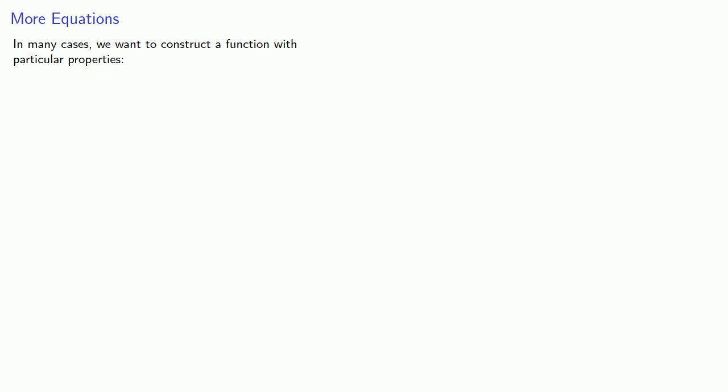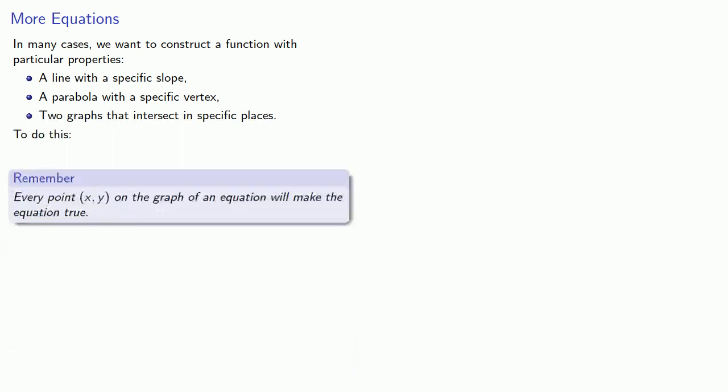In many cases, we want to construct a function with particular properties. For example, a line with a specific slope, a parabola with a specific vertex, two graphs that intersect in specific places. To do this, it's helpful to remember every point on the graph of an equation will make the equation true.